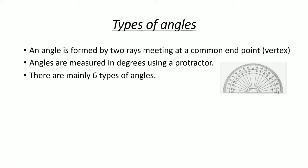Hello students. In this video we shall learn the different types of angles. An angle is formed by two rays meeting at a common endpoint, which is called the vertex — so an angle is like this: two rays and a common endpoint. Angles are measured in degrees using a protractor, which is the instrument we use to measure angles.